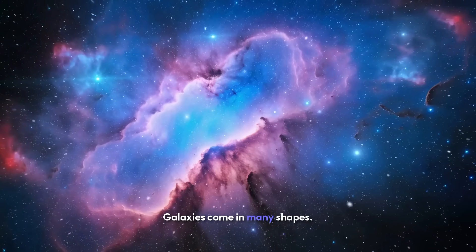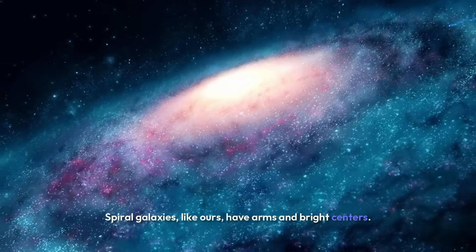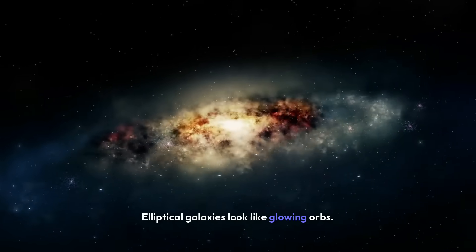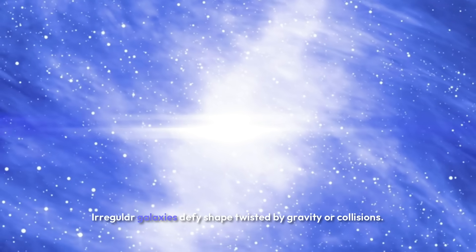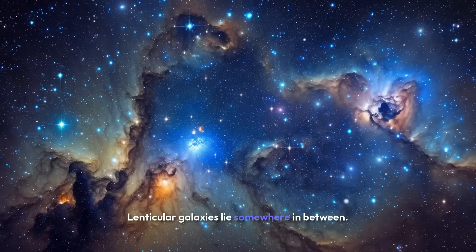Galaxies come in many shapes. Spiral galaxies, like ours, have arms and bright centers. Elliptical galaxies look like glowing orbs. Irregular galaxies defy shape, twisted by gravity or collisions. Lenticular galaxies lie somewhere in between.